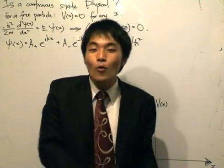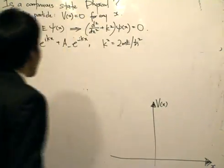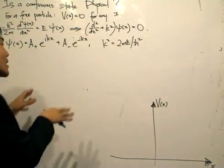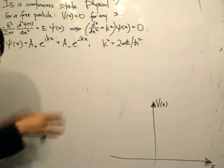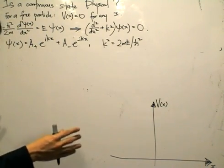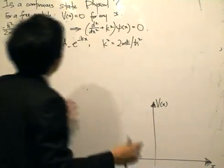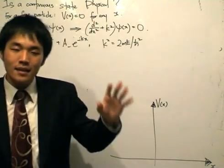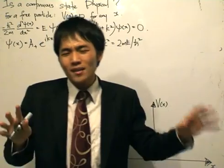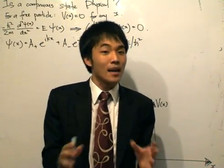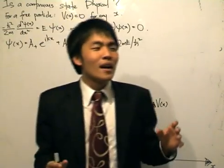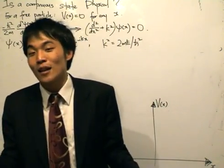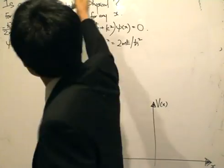Since there are no boundary conditions, there are no restrictions on the energy of the particle. With no energy restrictions, we have these two oscillating solutions — we'll see why in a minute. For all energy values the solutions are oscillating, so we say it's a continuous state. Technically, it's a continuous solution for all energy values. Some potentials give continuous solutions for certain energies and bound solutions for others, but for a free particle we know it's always a continuous state.